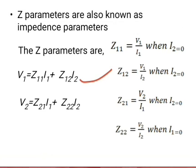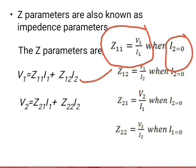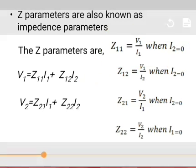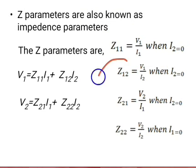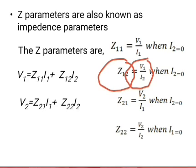From equation 1, Z11 equals V1 divided by I1 when I2 equals 0, that means the output is open. And Z12 equals V1 divided by I2 when I1 equals 0, that means the input is open.